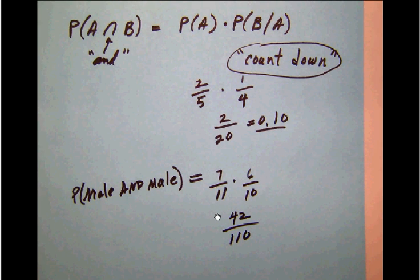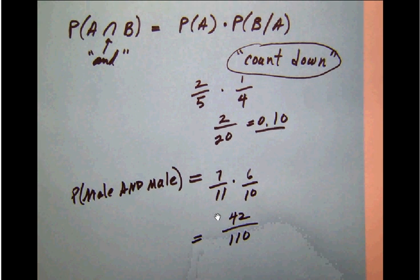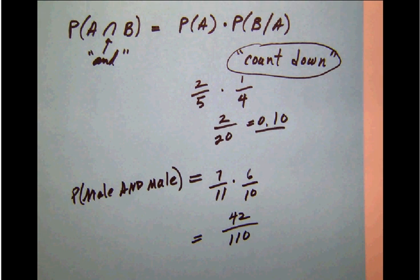Now we'll multiply that out: 7 times 6 is 42, 11 times 10 is 110, so we have the fraction 42 out of 110. They may want that to be expressed as an exact fraction, so we need to reduce that fraction to its lowest term.